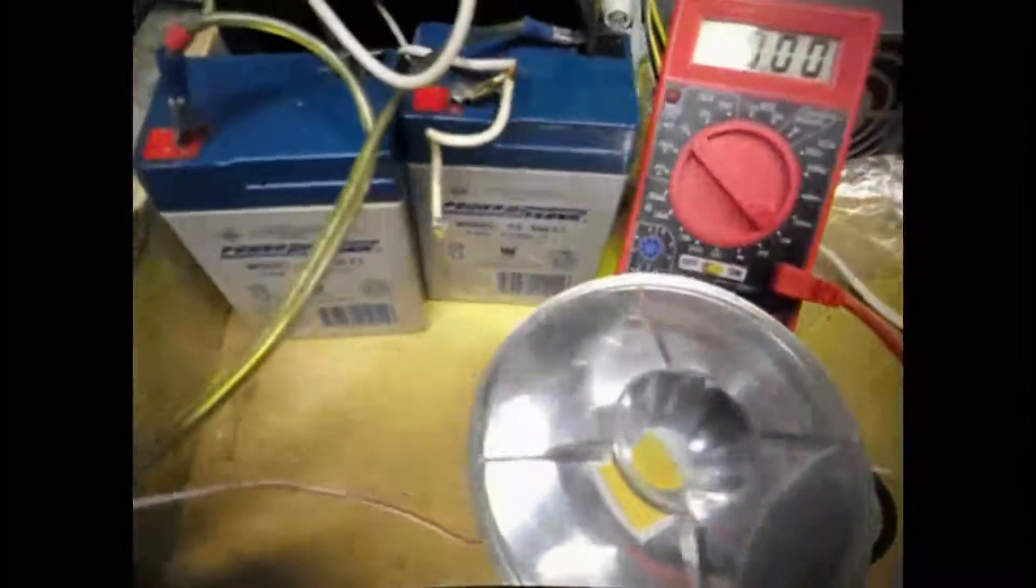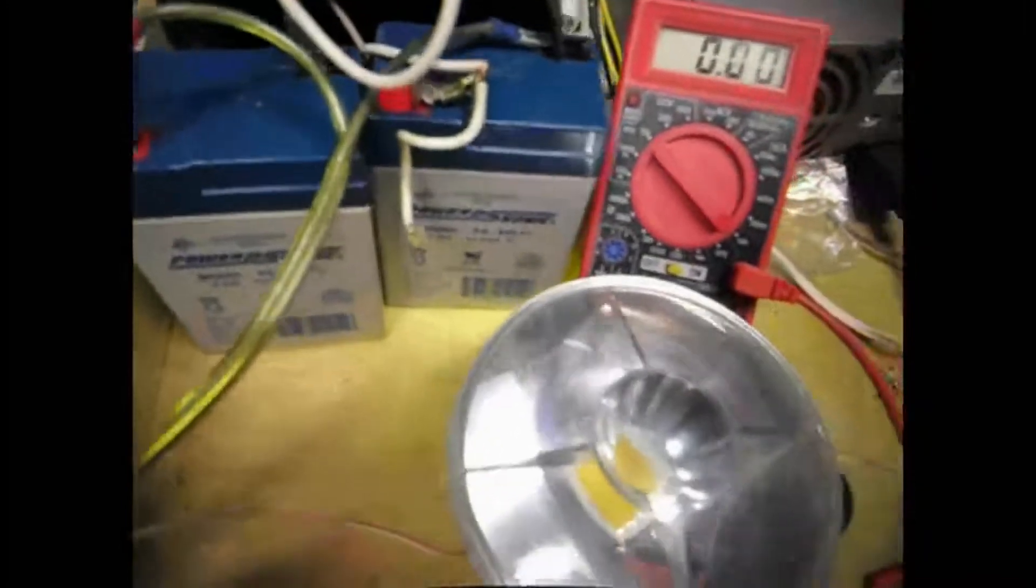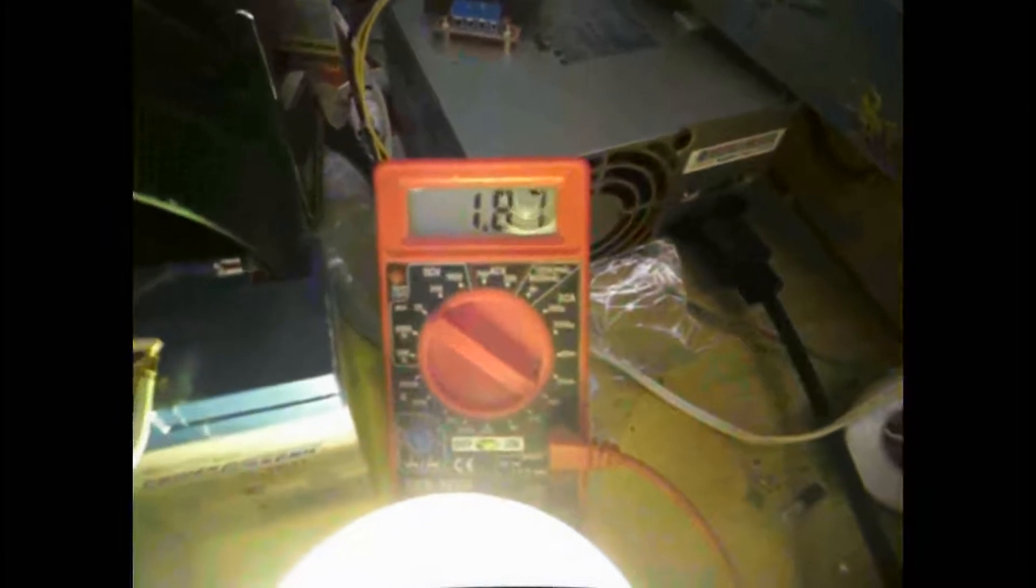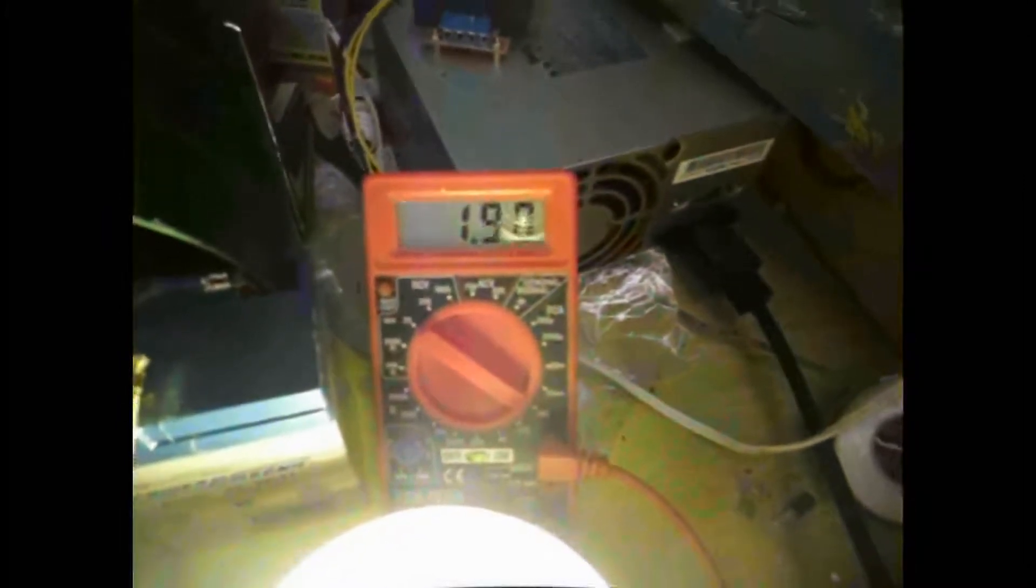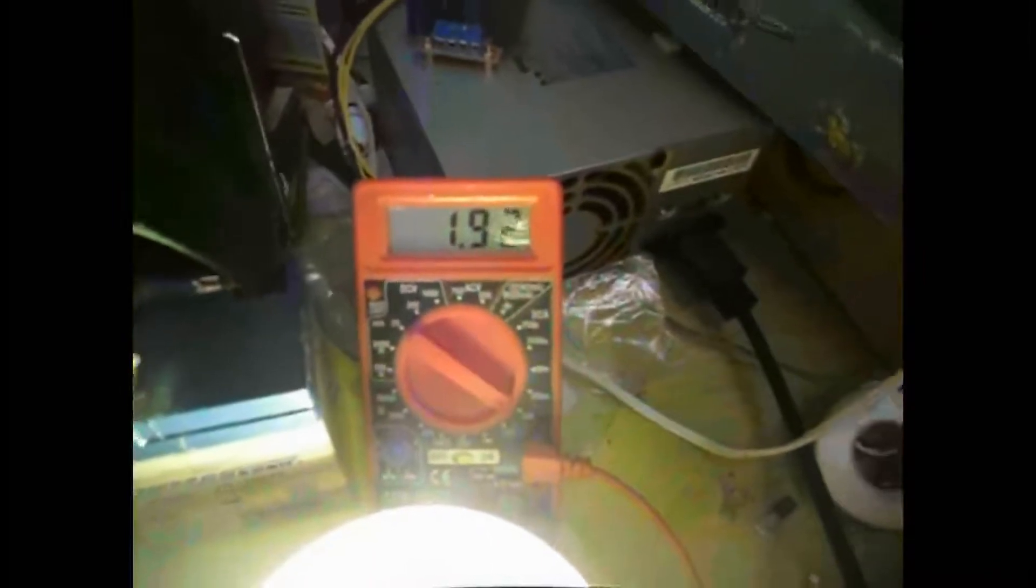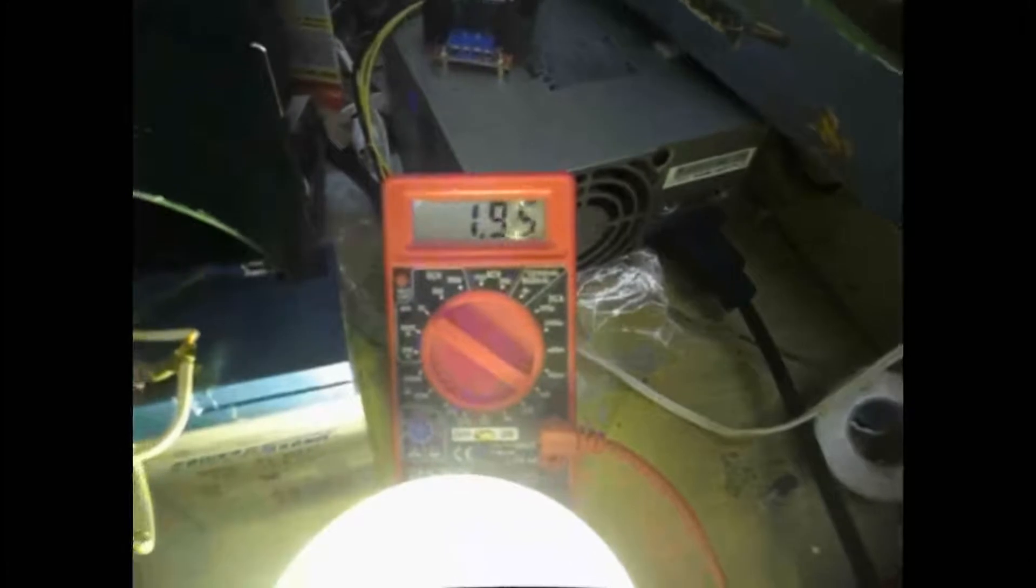I thought that it was going to be 12 volts and it would give me 4.5 amps coming out. But you turn it on and you can see it only gives you half of that. My batteries might be a little low, but that's definitely not 4.5.